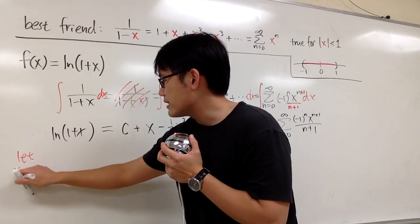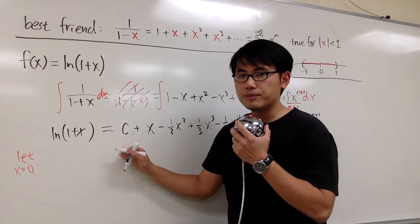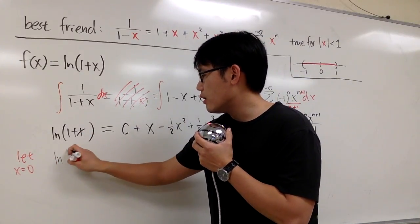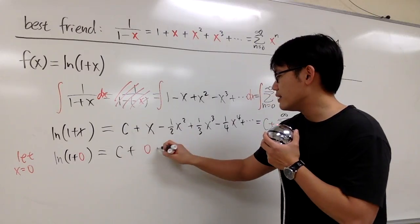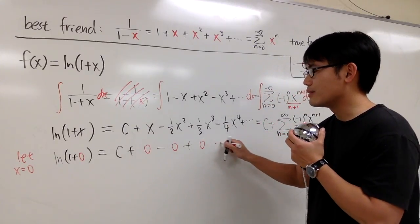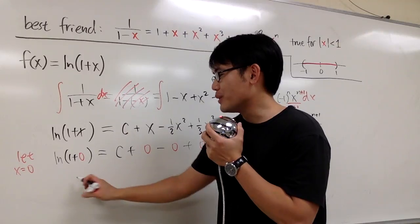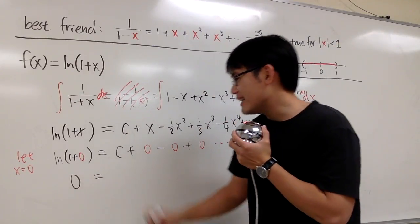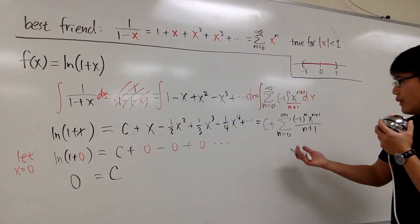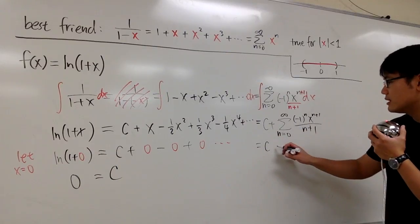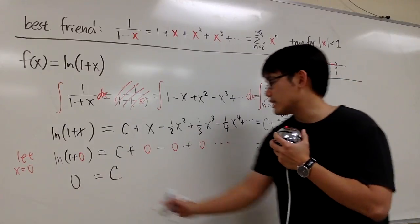To find c, I'll choose x equals 0 and plug into both sides. On the left we get ln(1+0), which is ln(1), which equals 0. On the right we have c plus 0 minus 0 plus 0 — a bunch of zeros — therefore c equals 0. The same applies to the sigma notation version: plugging in x=0 gives all zeros, so c equals 0 there as well.